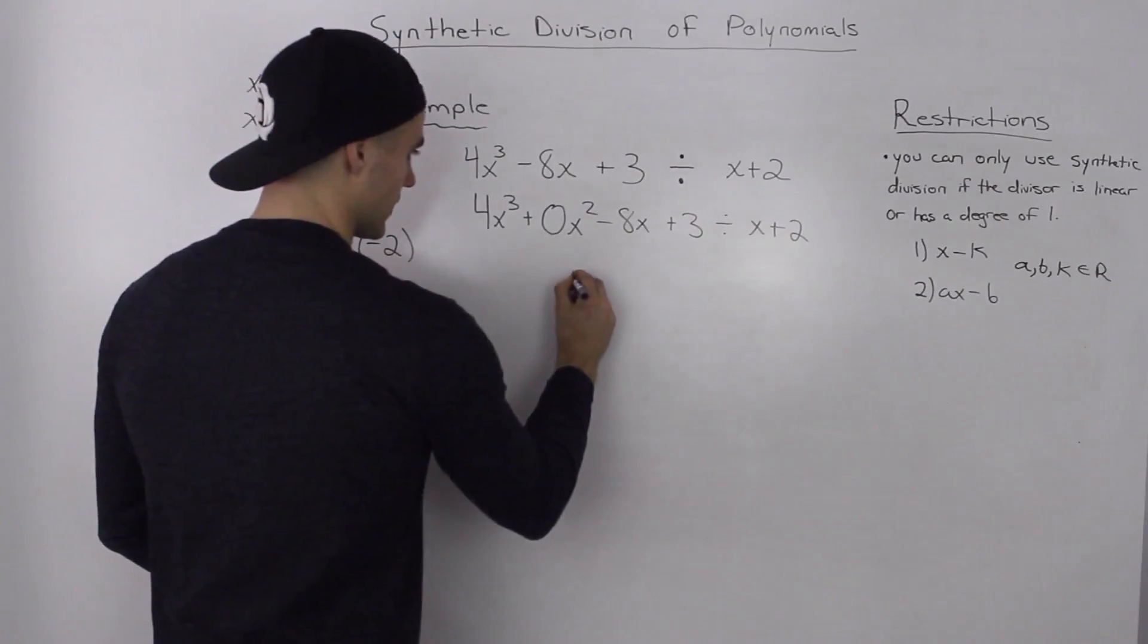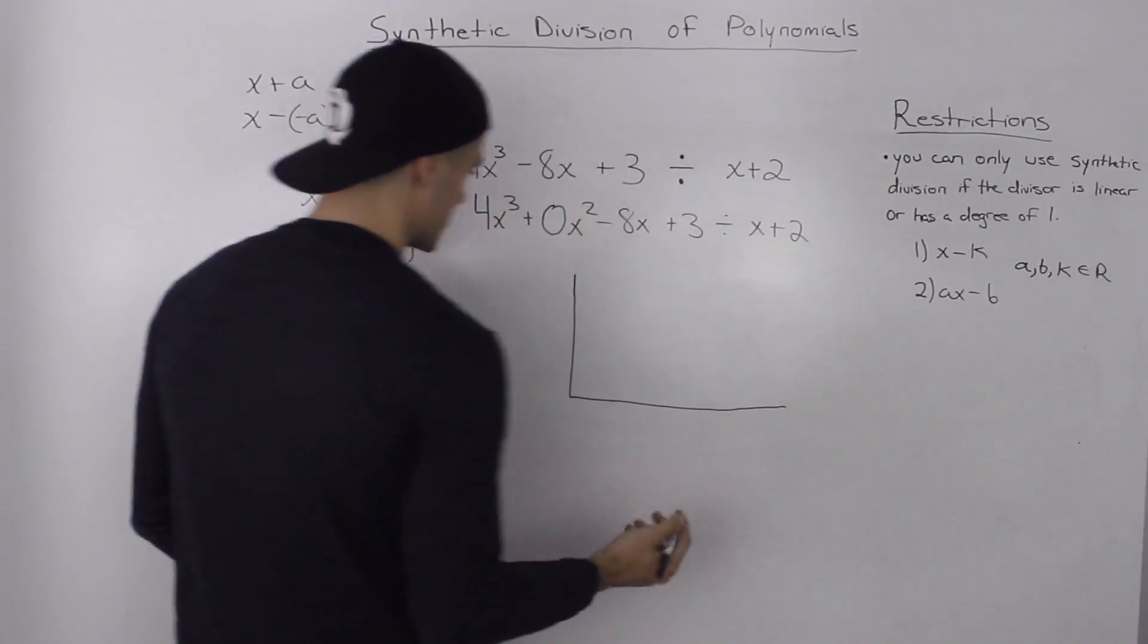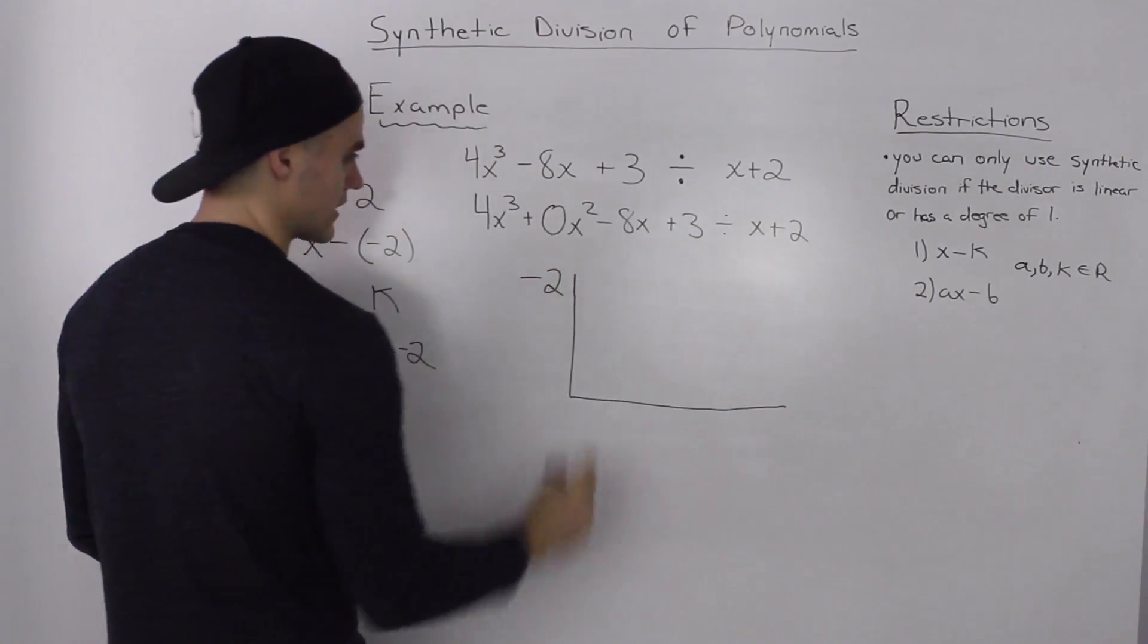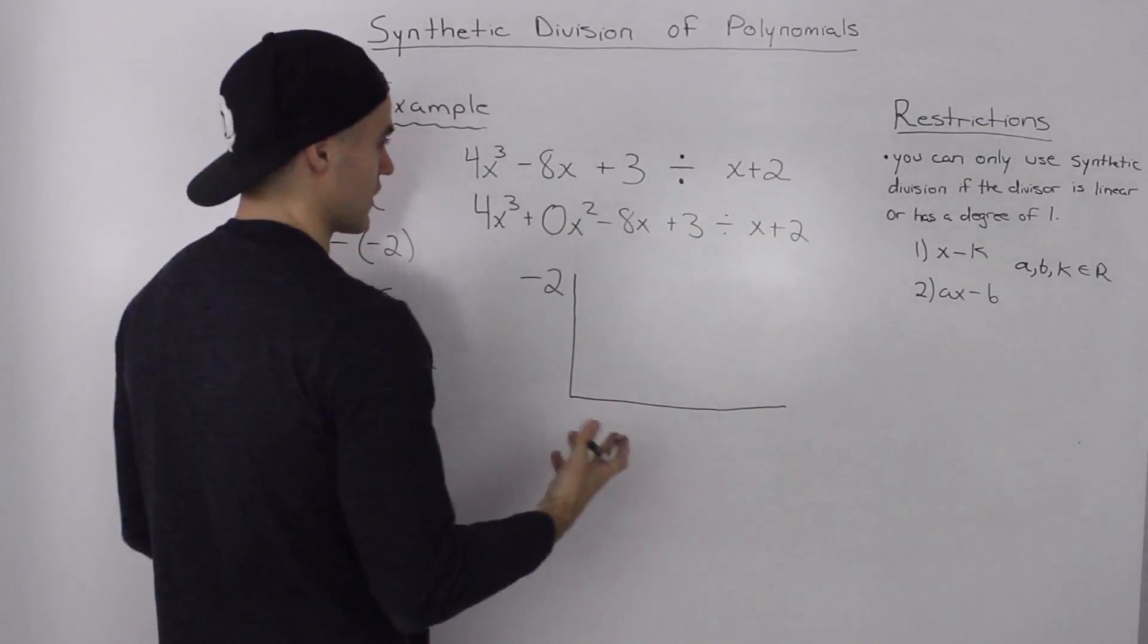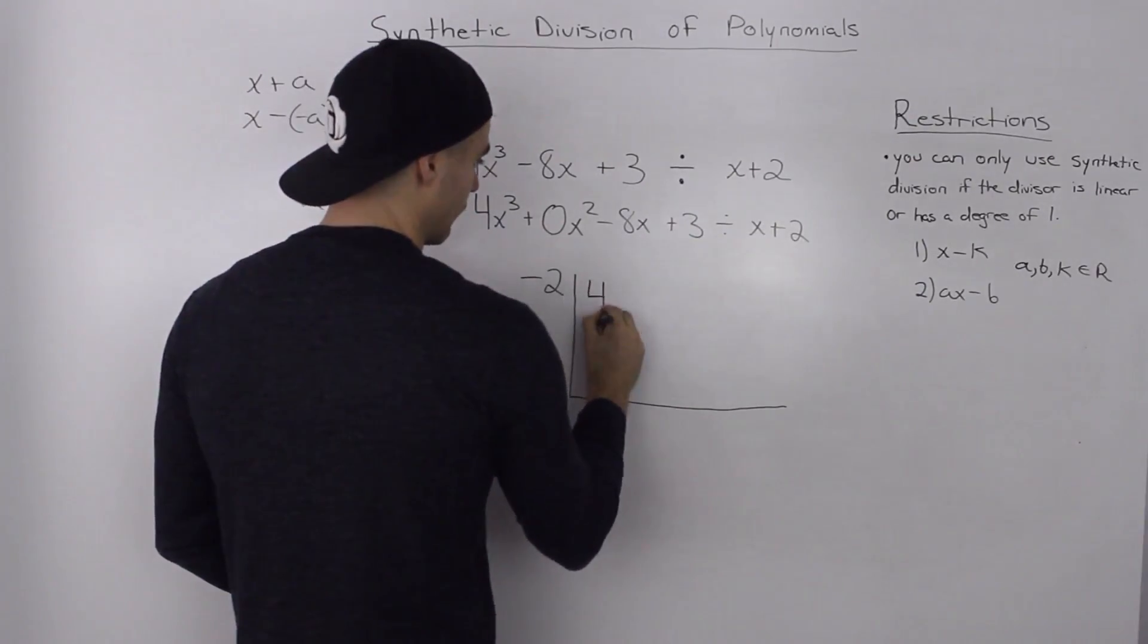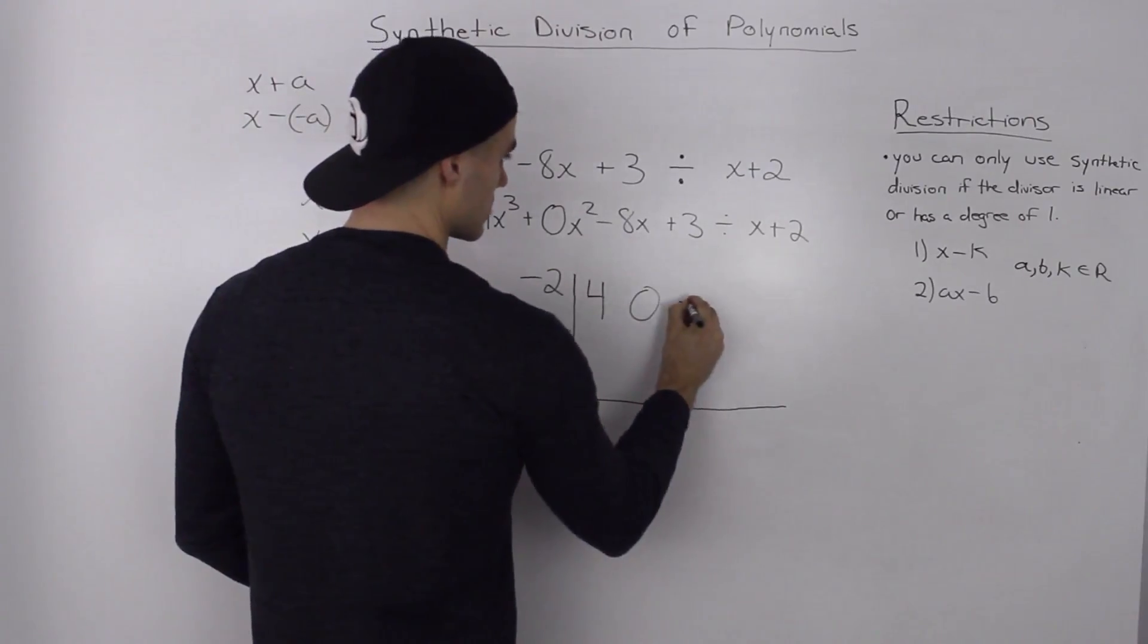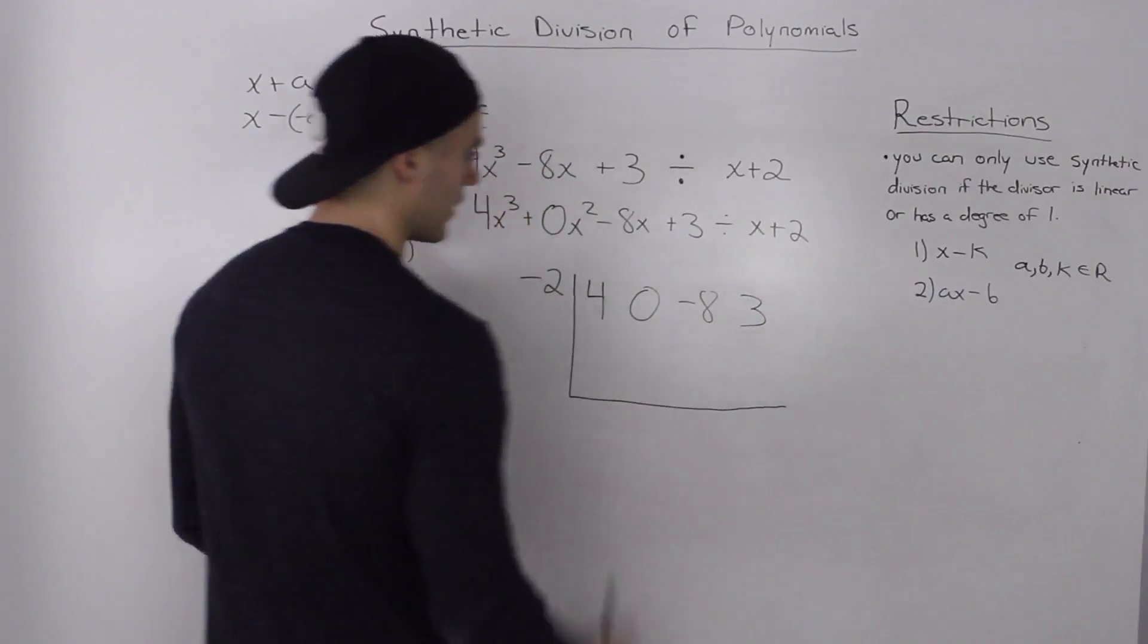So now we can make our chart. We have everything that we need. So the first thing we do is we take our k value, put it up here. So our k value in this case is negative 2. Then in the first row, we rewrite our leading coefficients of the dividend, including this 0 that we included. So 4, 0, negative 8, and then positive 3.